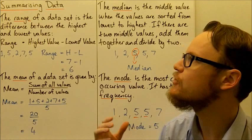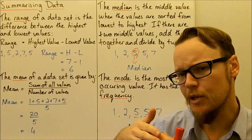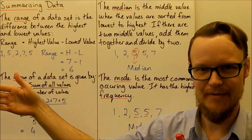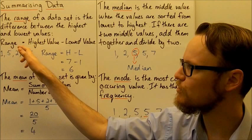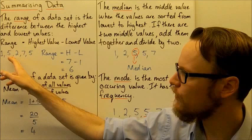The first piece of information that we can get is something called the range. The range of a data set is the difference between the highest and lowest values. It looks at how many different possible values there could be between the highest number and the lowest number in the data set. We can find that by subtracting the lowest value from the highest value: range = highest value minus lowest value.